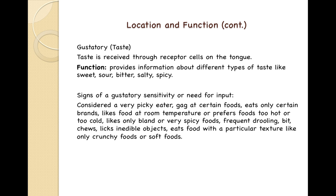Gustatory (taste) is received through receptor cells on the tongue. Its function is to provide information about different types of taste: sweet, sour, bitter, salty, and spicy. Signs of gustatory sensitivity or need for input include being a very picky eater, gagging at certain foods, eating only certain brands, preferring food at room temperature or at extremes of temperature, liking only bland or very spicy foods, frequent drooling, biting or chewing inedible objects, and eating only foods with a particular texture like only crunchy or soft foods.